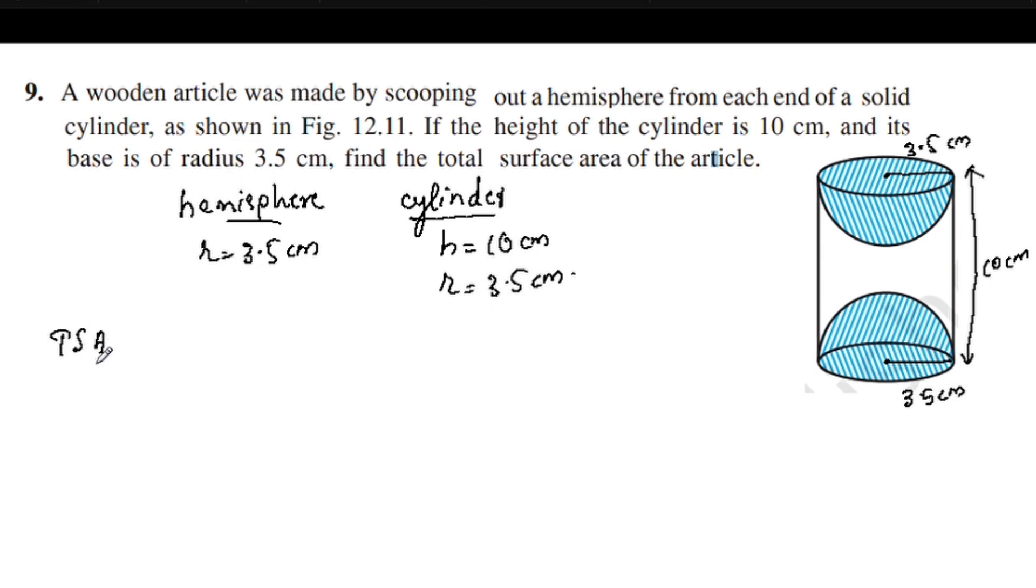Total surface area of solid is equal to curved surface area of cylinder plus 2 times curved surface area of hemisphere.